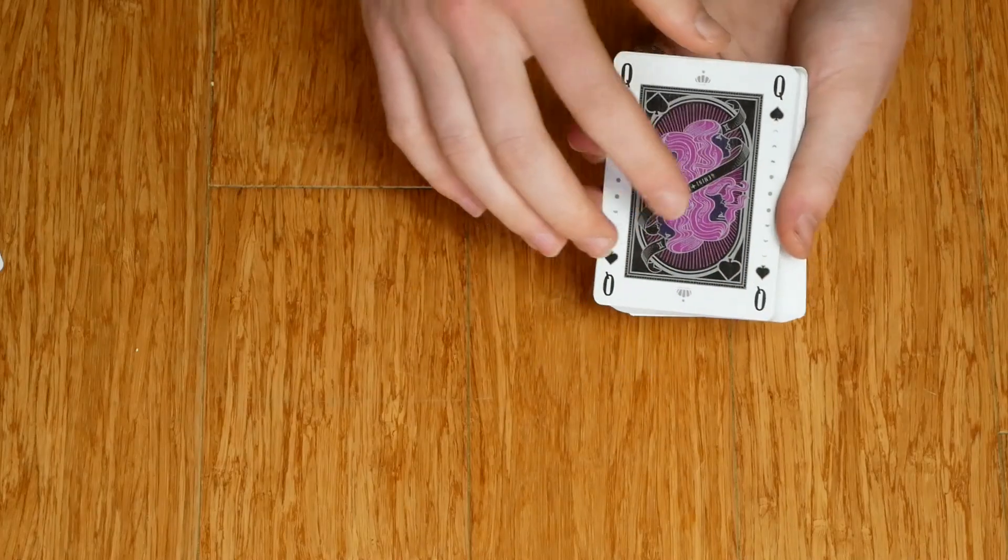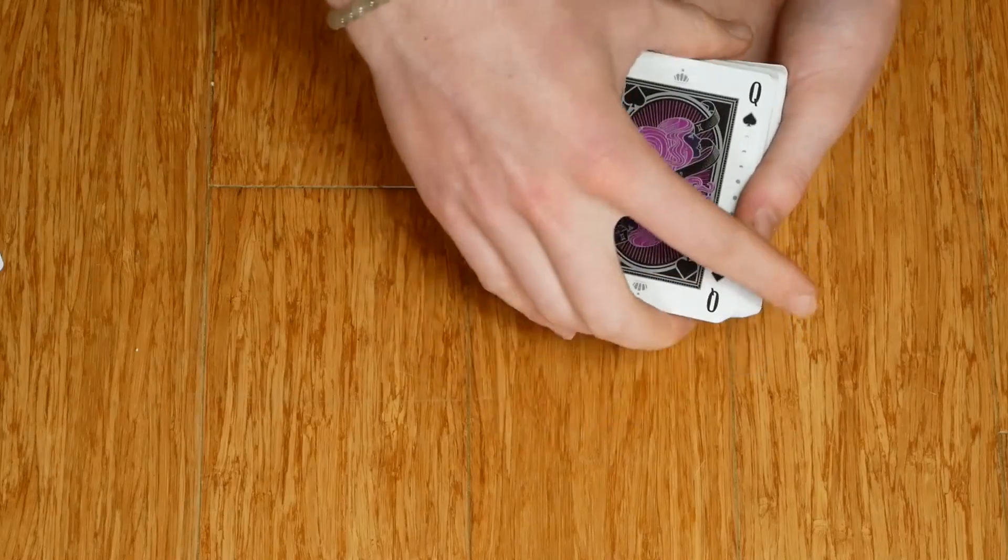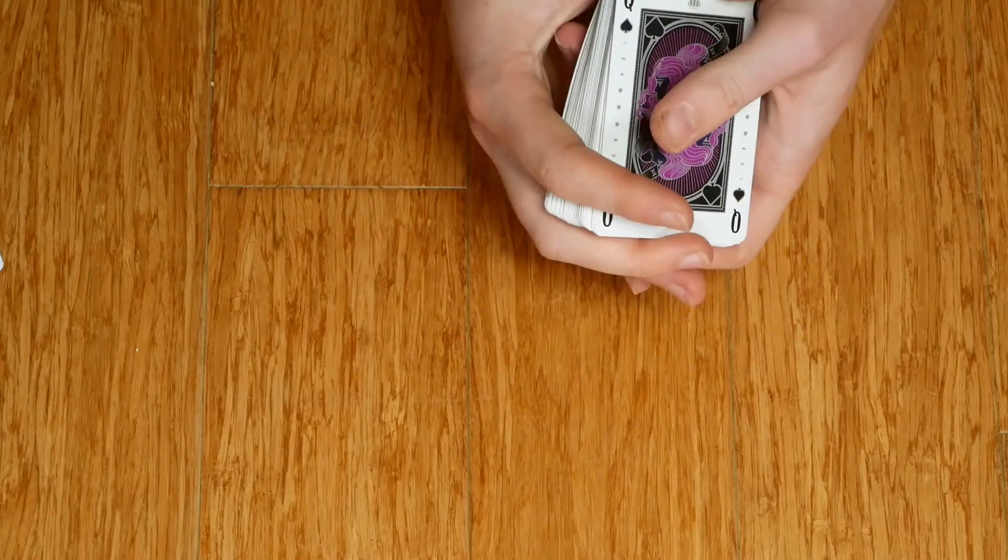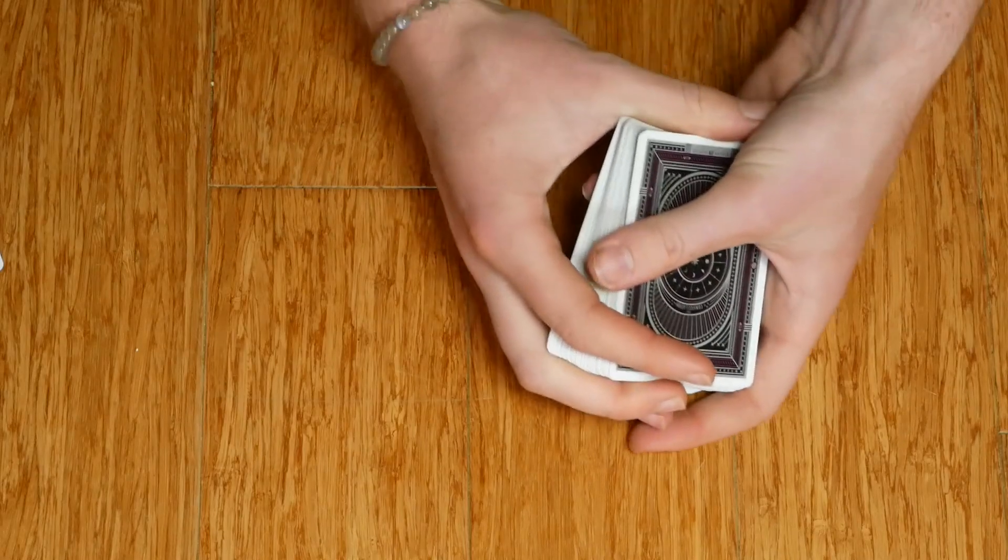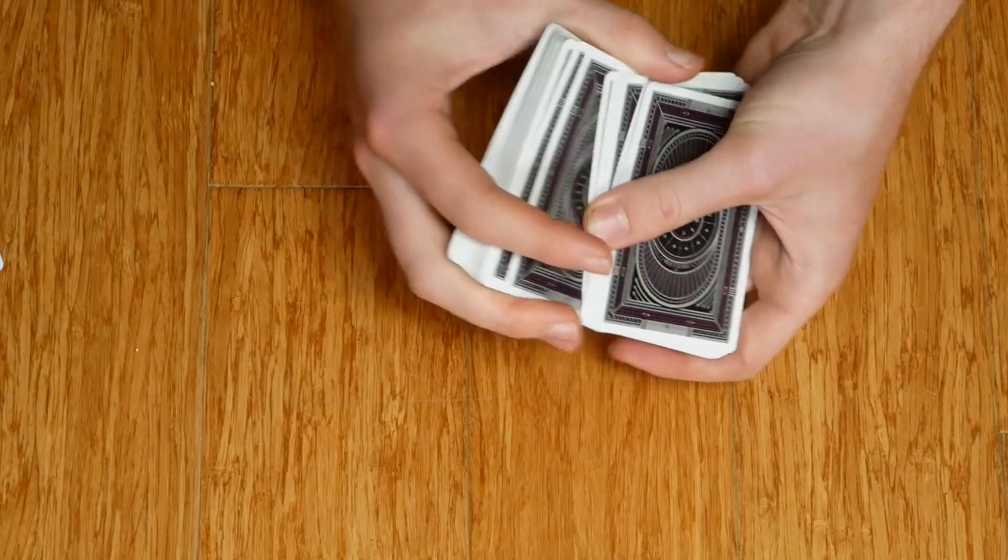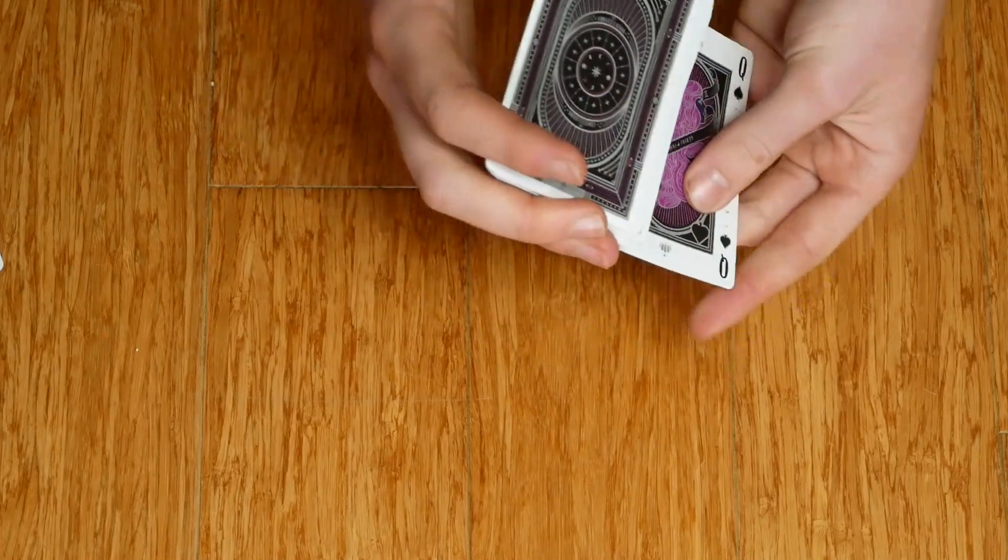For the sake of this trick, I'm going to leave it face up so that we know where it is. And now, the most important part, I'm going to shuffle it back into the deck, but not really. See what I'm doing here? I take the top card and I put it on the bottom.